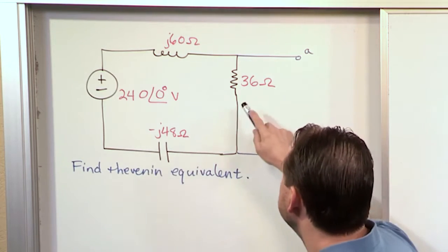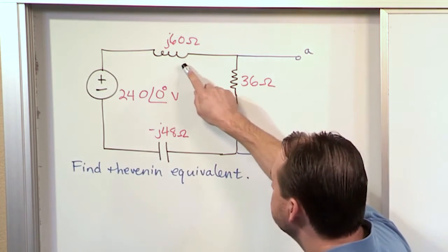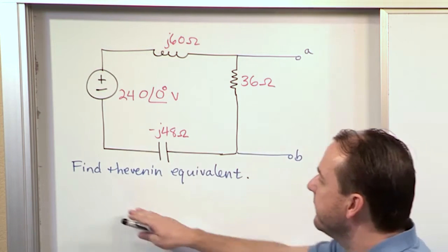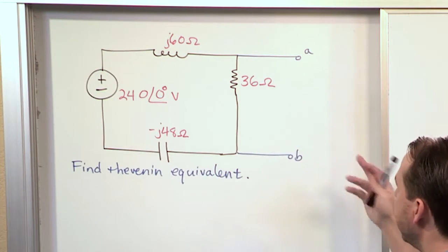And we have three elements here. We have a resistor, we have an inductor, we have a capacitor, and we have the impedances already given for everything, so you don't have to calculate that.